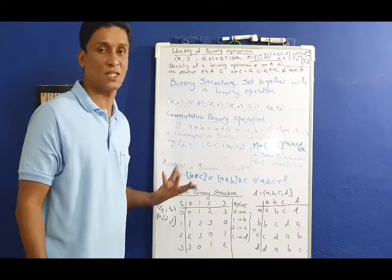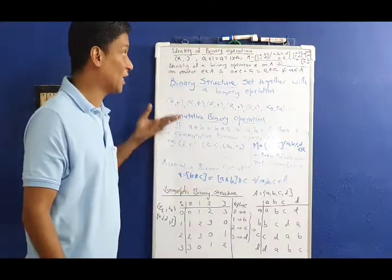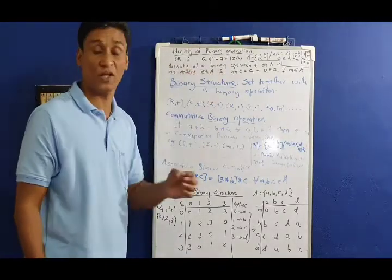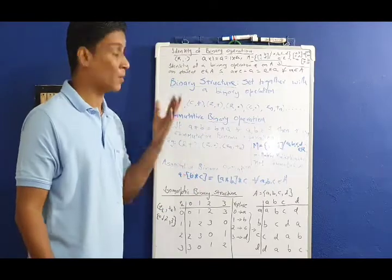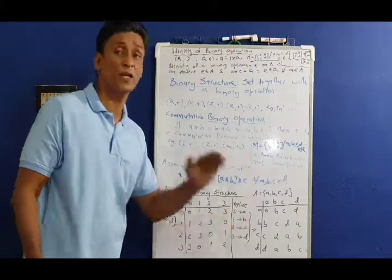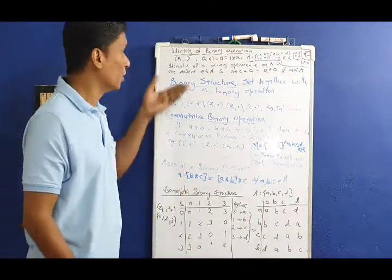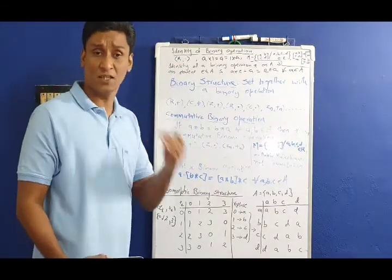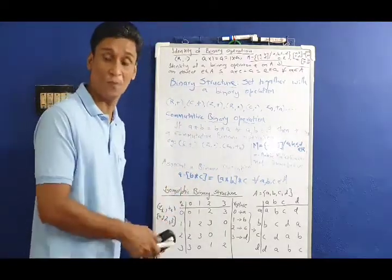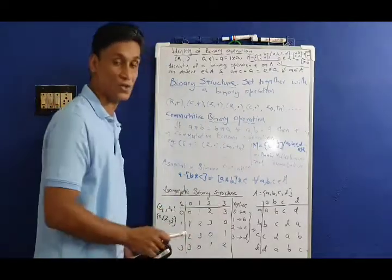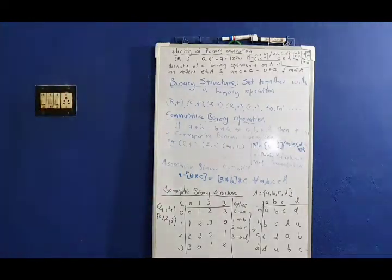I am very interested in the first and last concepts. The identity of a binary operation is very, very important, because a group requires an identity element. In the next video, I will teach examples. I am going to stop this video, but in the next video I will tell you about the definition of an isomorphic binary structure. Thank you.